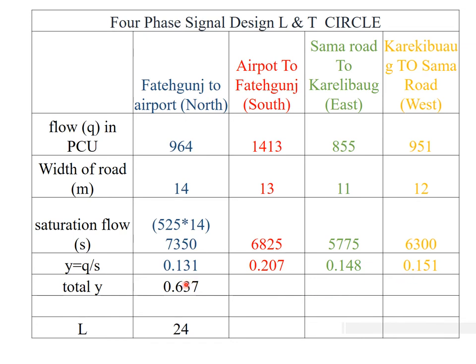This is the biggest difference between two-phase and four-phase design. For four-phase signal design, we consider all four Y values separately and sum them all. But for two-phase signal design, we take the lesser Y value from the North-South pair — which is 0.131 — and the lesser Y value from the East-West pair — which is 0.148 — and sum only those two lesser values.